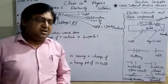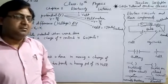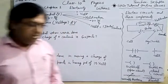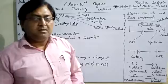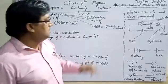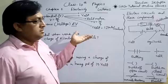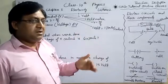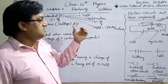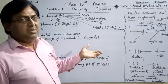SI unit of electric potential is volt, and the amount of electric potential is measured by voltmeter. Voltmeter is always connected parallel to the circuit where the voltage of that electrical appliance has to be measured.